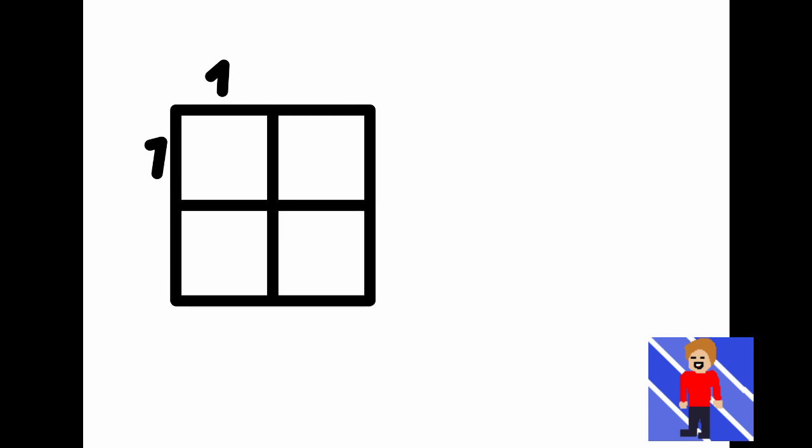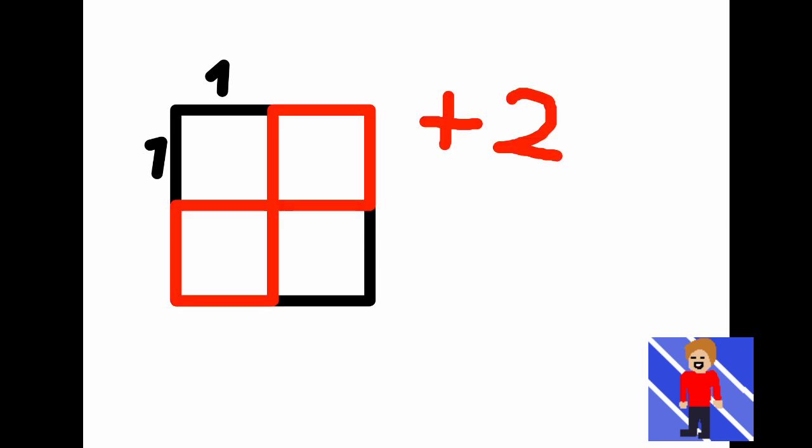But now let's extend this square. Now the area is 2 squared, 4. But look at how much we added. 3. 2 on the sides and 1 extra.